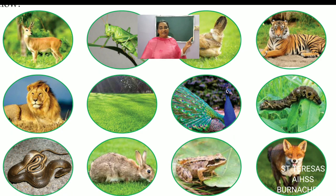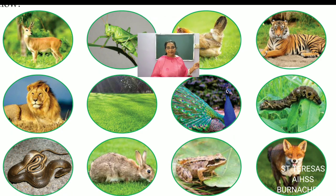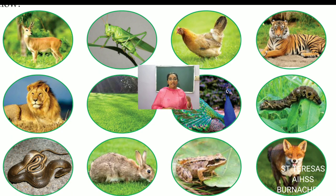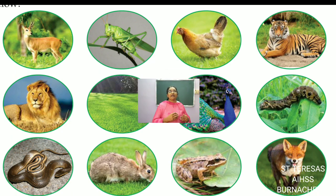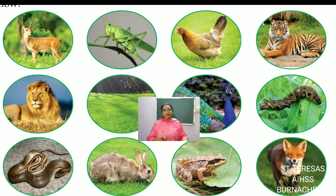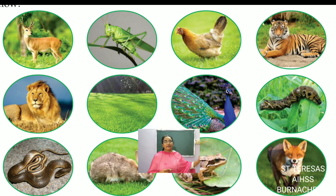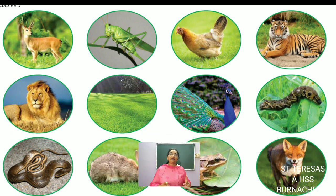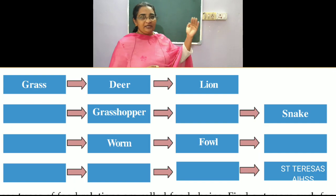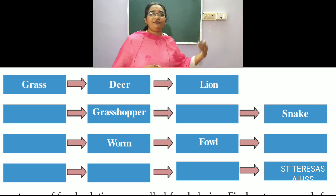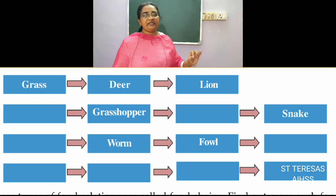In your textbook there is an illustration with many organisms: deer, grasshopper, hen, tiger, lion, and other insects. Observe the picture carefully and find out how many food chains you can make. On the next page, four food chains are already started — complete that table. Try to make the maximum number of food chains possible from this picture.